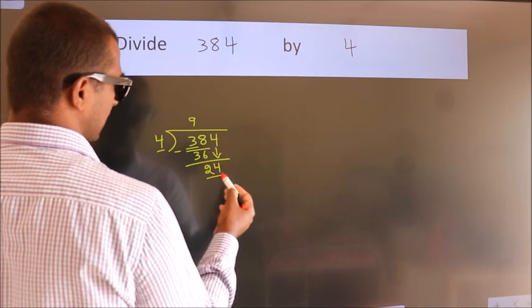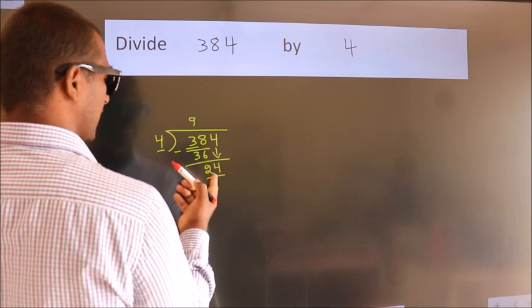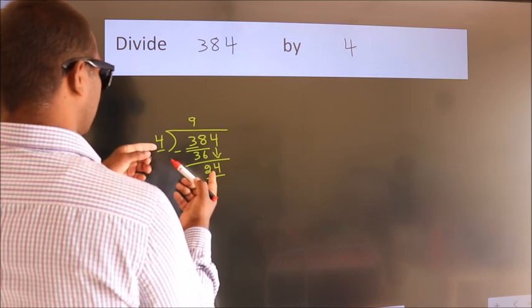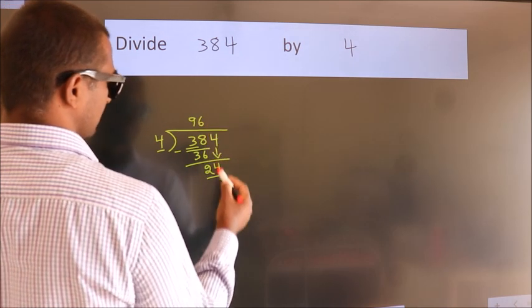So, 4 down. So, 24. When do we get 24? In the 4 table: 4, 6, 24.